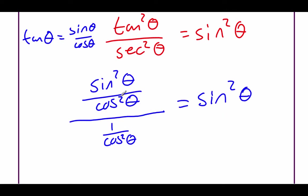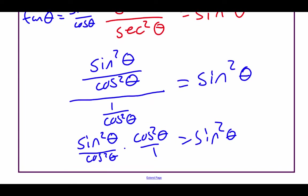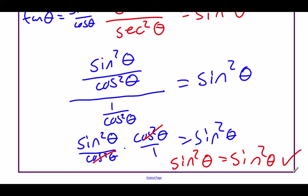I don't like looking at this as a fraction division problem, so instead of dividing by one over cosine squared on the bottom, I'm going to turn it into a multiplication problem using the reciprocal. Our problem becomes sine squared of theta over cosine squared of theta times cosine squared of theta over one, equals sine squared of theta. We can cancel out the cosine squared with our other cosine squared, leaving sine squared of theta on the left-hand side. We were trying to get that to equal sine squared of theta — we did, so we're all done with this one.